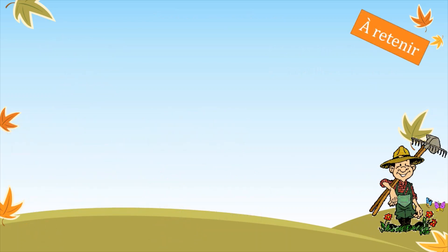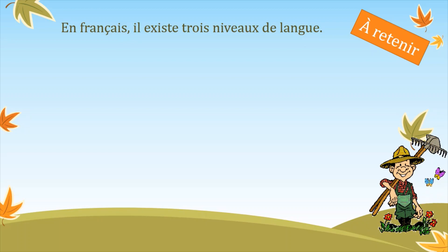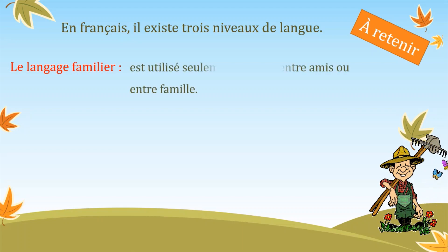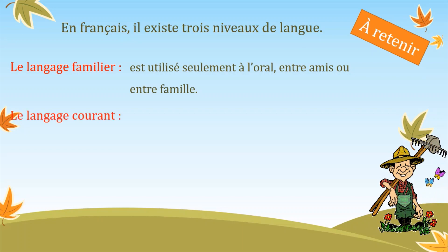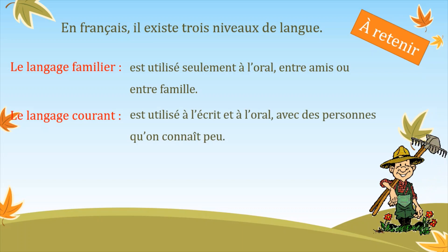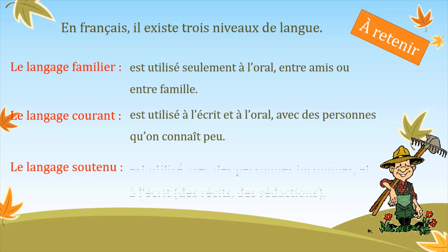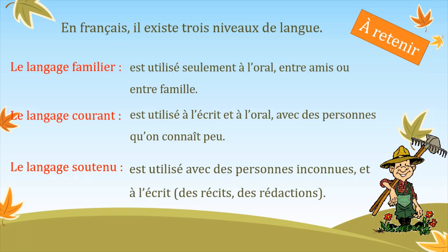À retenir : en français, il existe trois niveaux de langue. Le premier, c'est le langage familier ; ce langage est utilisé seulement à l'oral, entre amis ou entre famille. Le deuxième, c'est le langage courant ; ce langage est utilisé à l'écrit et à l'oral, avec des personnes qu'on connaît peu. Le troisième, c'est le langage soutenu ; il est utilisé avec des personnes inconnues et à l'écrit, quand on écrit des récits et des rédactions.